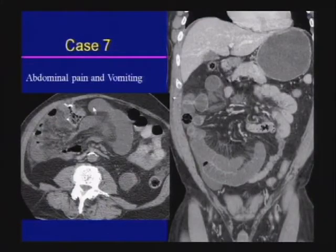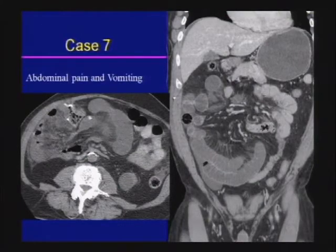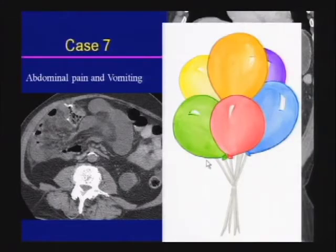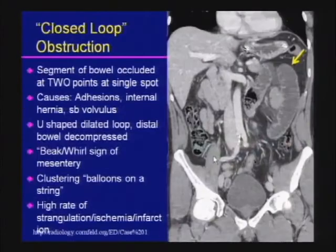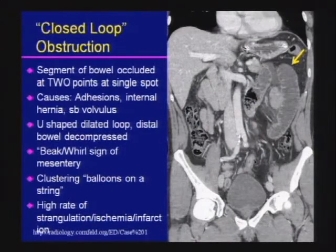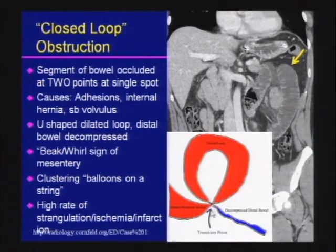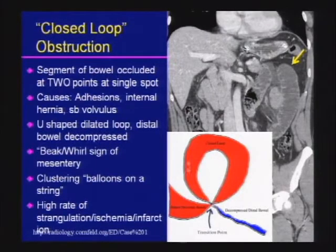A final case of small bowel obstruction shows a U-shaped, very dilated, clustered loop with mesenteric infiltration — a C-shaped loop as well — described as the clustering balloons on a string sign. This is a closed loop obstruction, a surgical emergency. The segment of bowel is occluded at two points in a single or very close location. Causes include adhesions, hernia, or small bowel volvulus. Because of the shape of a closed loop, it is predisposed to twist and volvulize, with a high risk of strangulation. Signs include beak and whirl signs, clustering balloons on a string.